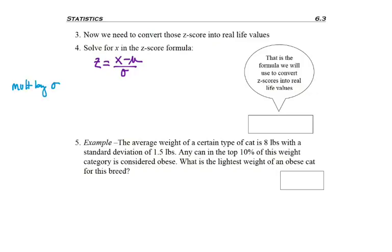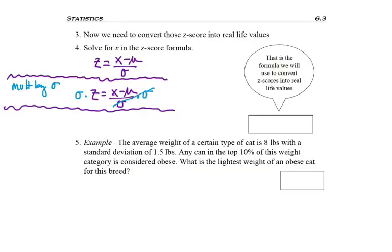So what we want to do is get rid of our denominator by multiplying both sides by σ. So I take my equation, multiply by σ, the standard deviation, so that I can cancel off my one denominator.